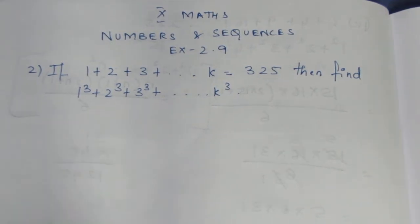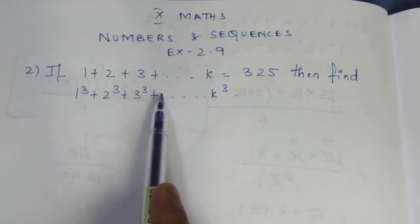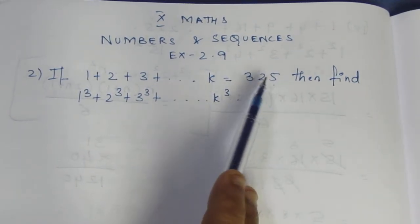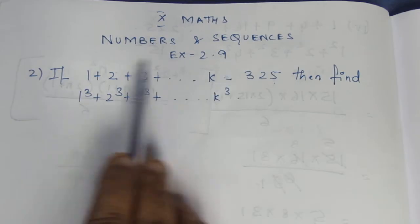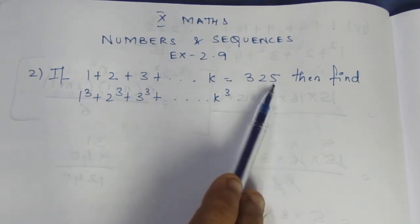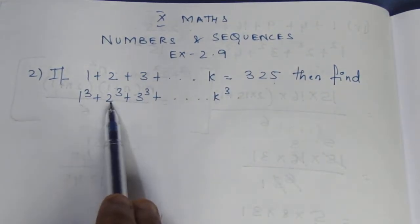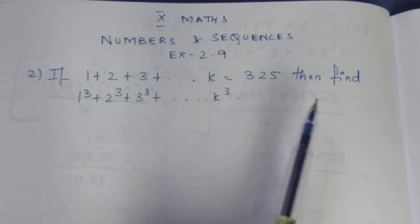Look at the question. If 1 plus 2 plus 3 up to k is equal to 325, then find 1³ plus 2³ plus 3³ up to k³.